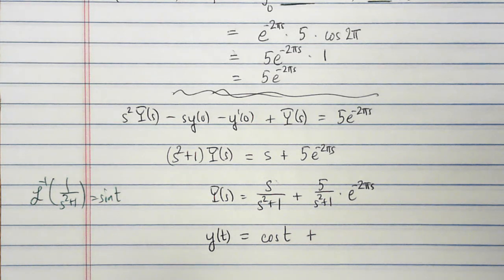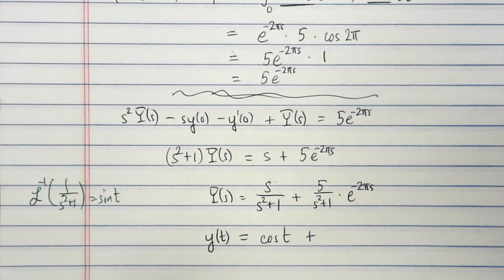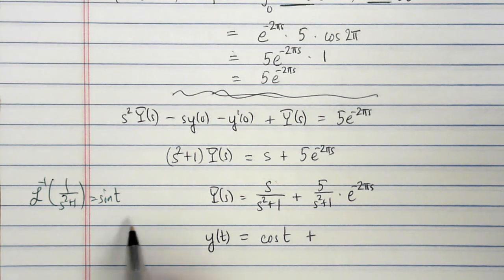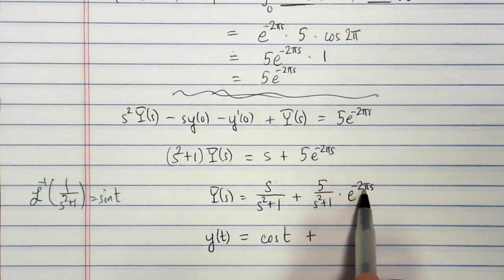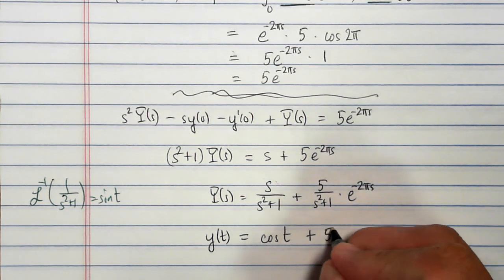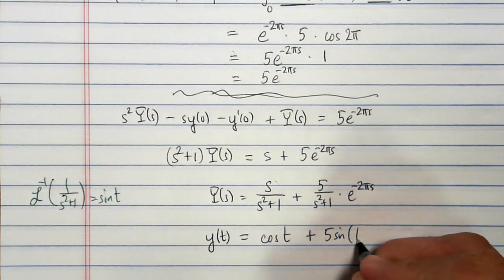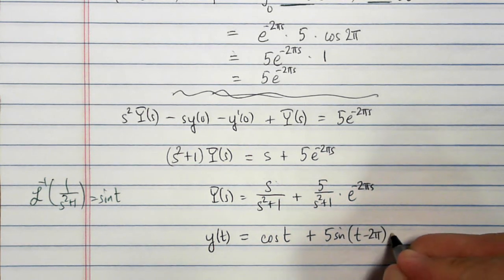And so using that, I will take everywhere I see a t, I will replace by t minus 2 pi to account for the 2 pi that I see here. So 5 times the sine of t minus 2 pi times the step function at 2 pi.